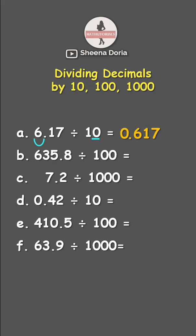Next, we have 635.8 divided by 100. So we have here two zeros. So let's move the decimal point two times to the left. Our answer is 6.358.